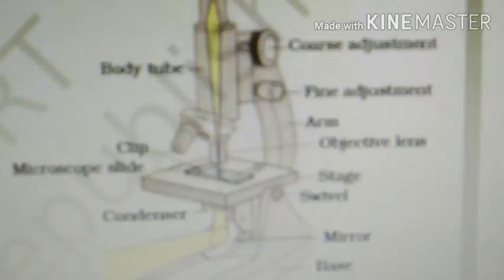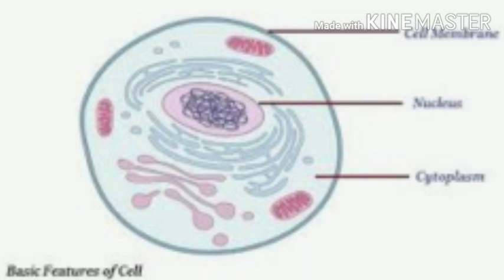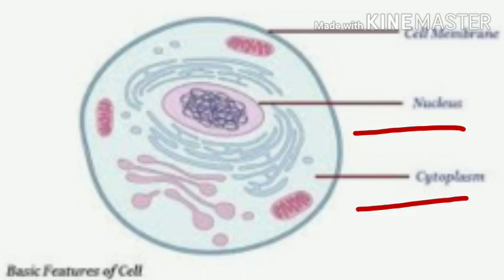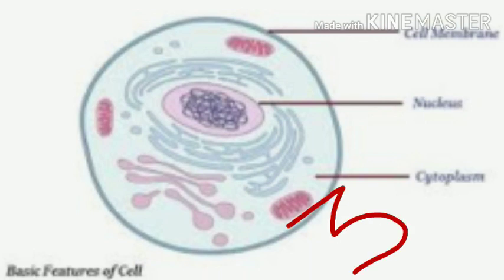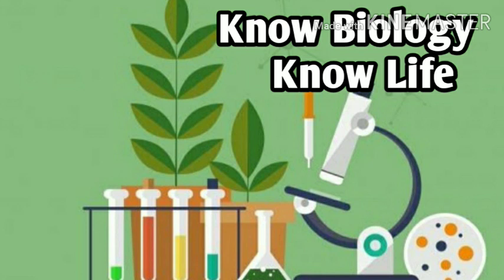If we study a cell under a microscope, we would come across three important and common features in almost all cells. They are: number one, plasma membrane; number two, nucleus; and number three, cytoplasm. Every cell has at least these three components. This is the introductory class for class 9.